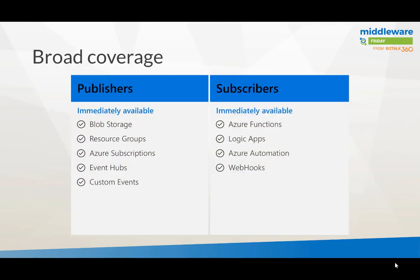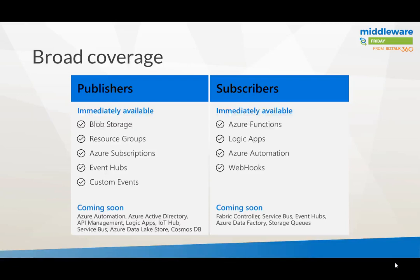There's broad coverage. The event publishers and sources available right now are Blob, Resource Group, Azure Subscription, Event Hubs, and you can create your own custom events — either through Cloud Shell, as shown in the Quick Start, or through the .NET client. Available subscribers right now include Functions, Logic Apps, Automation, and Webhooks. Of course, more publishers and subscribers will be added in the future.